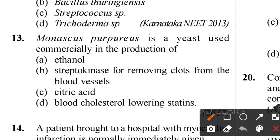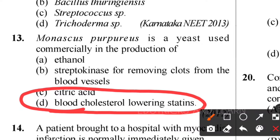Thirteenth question: Monascus purpureus is a yeast used commercially in the production of what? Very easy - Monascus purpureus is a yeast which produces a blood cholesterol-lowering agent called statins. Statin is a type of blood cholesterol-lowering agent produced by Monascus purpureus.